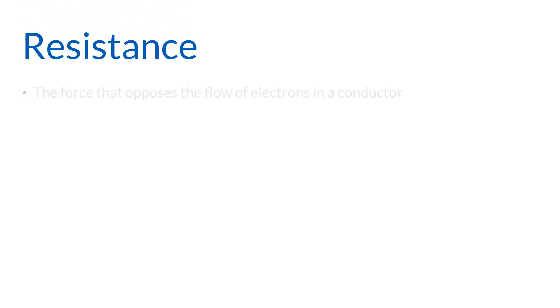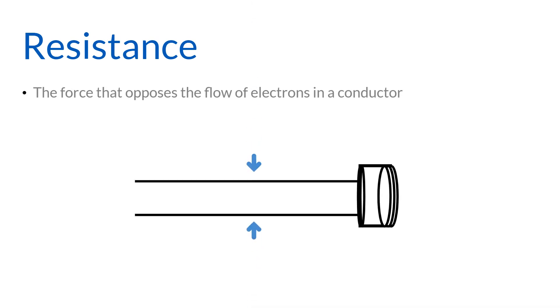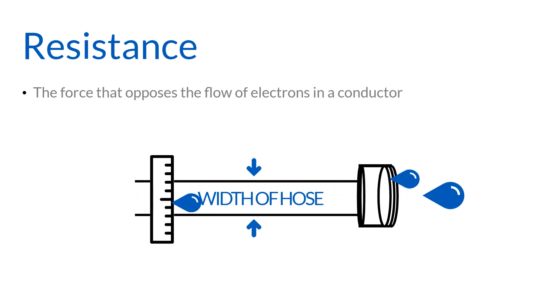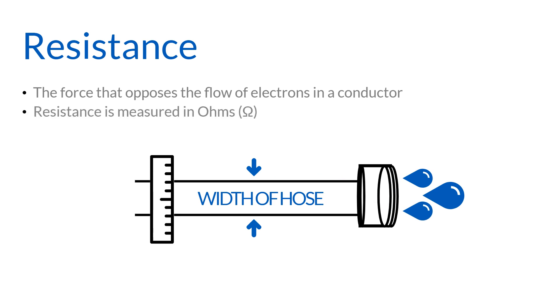Resistance refers to the force that opposes the flow of electrons in a conductor. Resistance is like the width of the hose in our water analogy. The thinner the hose, the higher the resistance and the harder it is for water or current to flow through it. Resistance is measured in ohms. In general, there are four factors that affect the amount of resistance in a conductor.